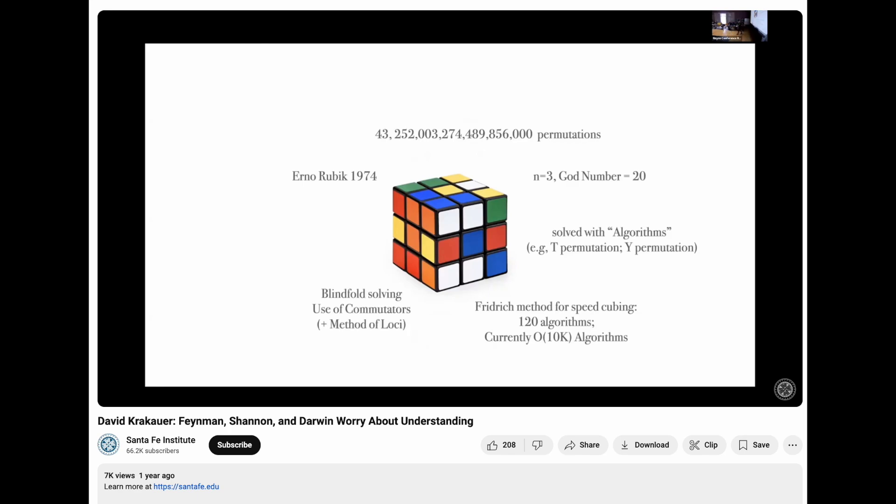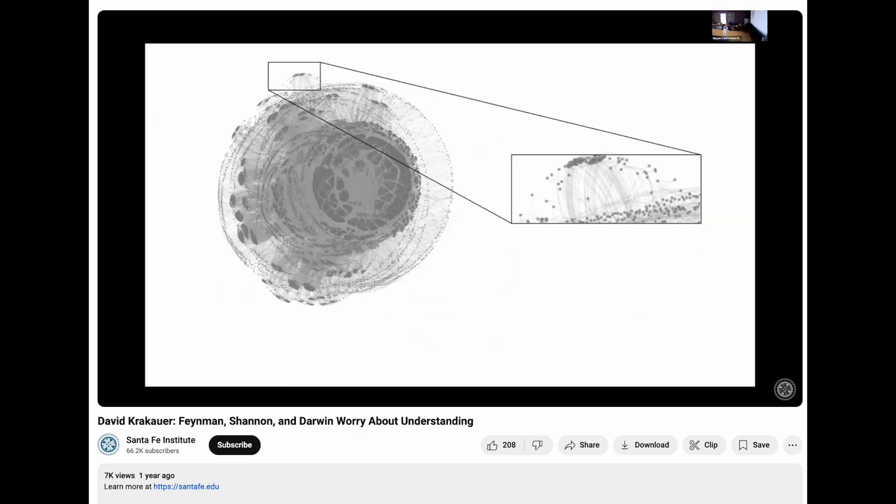I'm interested not so much in skill, but expertise. So that's the Cayley graph. This is a massive structure. When you twist a face, you're basically moving along an edge in this massive graph.